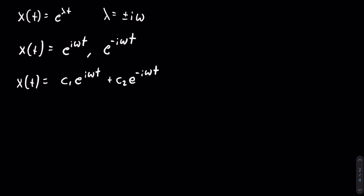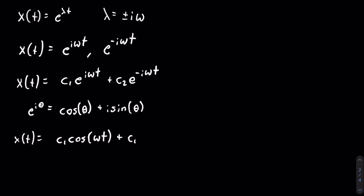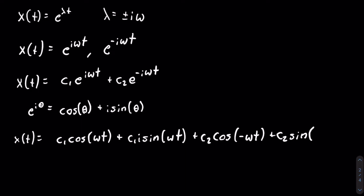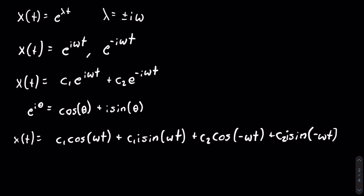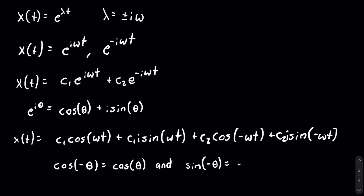Now we have e to the power of i in both terms, so we can use Euler's identity, which says that e to the i theta equals cosine of theta plus i sine of theta. Using Euler's formula, x of t becomes c1 cosine of omega t plus c1 i sine of omega t, plus c2 cosine of negative omega t plus c2 i sine of negative omega t. Cosine and sine are even and odd functions respectively, so cosine of negative theta equals cosine of theta and sine of negative theta equals negative sine of theta.